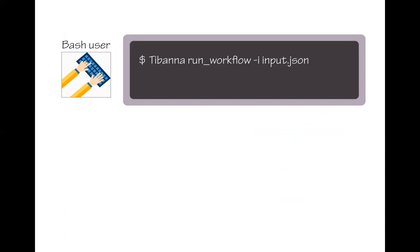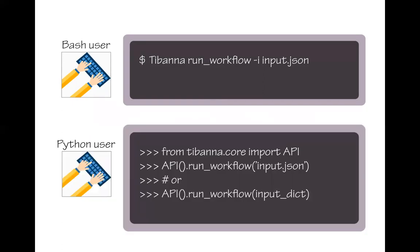The idea of Tibana is to make life easier for users by handling all these tedious miscellaneous tasks automatically. For a user, it's just one command: type tibana run workflow with one input file in JSON format that contains all the specifications — what kind of workflow to run, the input files, and the EC2 instance configuration. Tibana also offers a Python API, so the same thing can be done in Python as well.